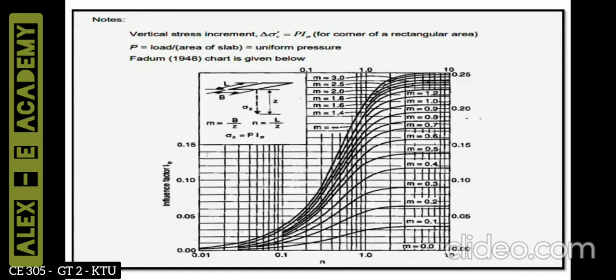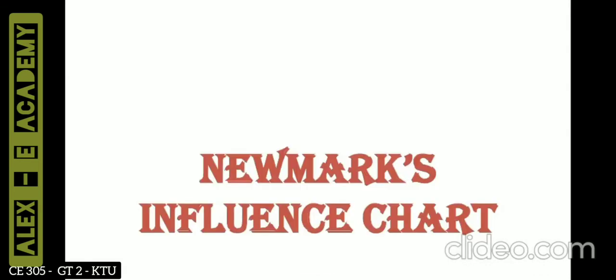Knowing the values of M and N we can plot and find the influence factor I_n by interpolation. If Fadum's chart is given in the question, you won't be given the tabular column used previously to find I_n. It is just a graphical representation to find the influence factor using M and N from the given dimensions of the rectangular plot.